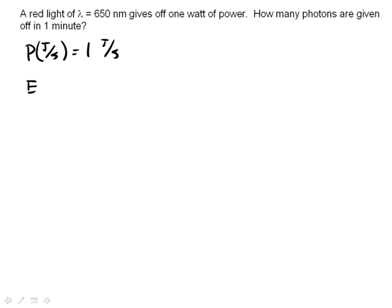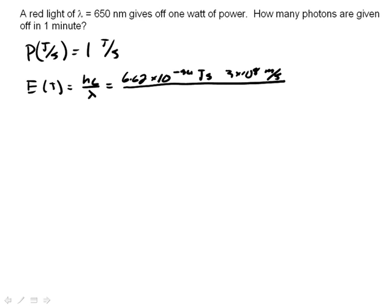So the energy of one photon in joules is equal to hc over lambda, which is 6.62 times 10 to the minus 34 joule seconds, times 3 times 10 to the eighth meters per second, divided by 650 times 10 to the minus 9 meters.